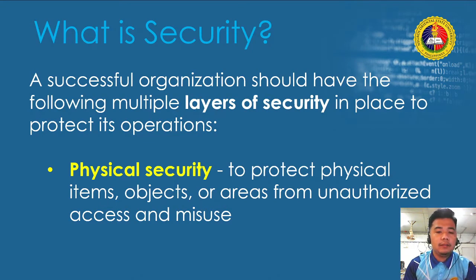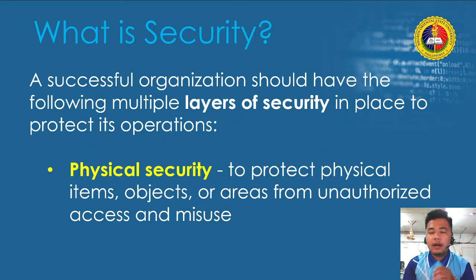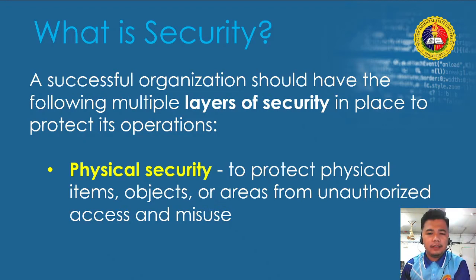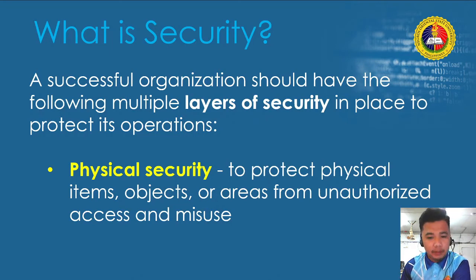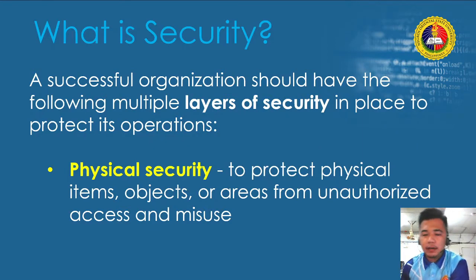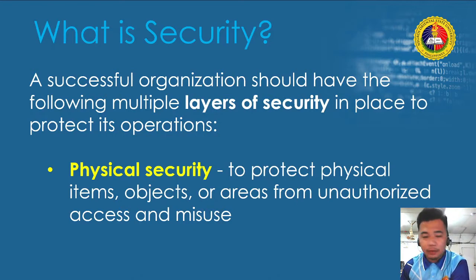Every successful organization should have multiple layers of security in place to protect its operations. When we consider the layers of security, we ask: what aspects inside the organization should be secured? First is physical security — this is to protect physical items, objects, and areas from unauthorized access or misuse. For example, here in NorSoBias, there are different aspects where the university protects its physical equipment and assets.